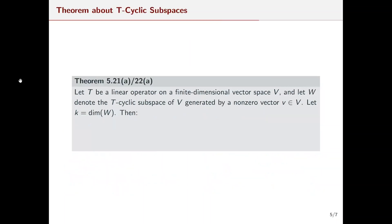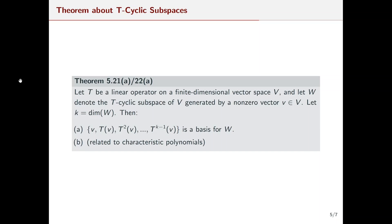Now let's look at Theorem 5.21a (or 5.22a in the 5th edition). It says: if T is a linear operator on a finite dimensional vector space V, and W is the T-cyclic subspace of V generated by a non-zero vector v, and if the dimension of W equals k, then the set {v, T(v), T²(v), …, T^(k−1)(v)} is a basis for W. There is a part (b) to this theorem related to characteristic polynomials, which will require another video.